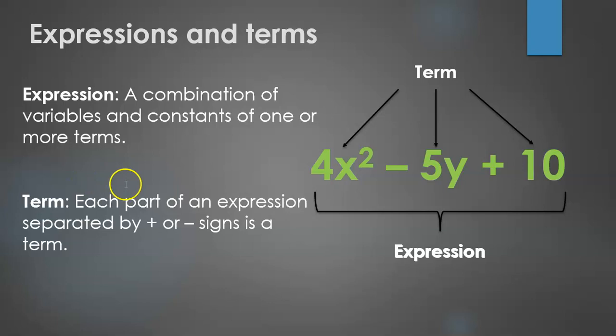For instance, if you had an expression of the form a minus 4b plus 5c, then a would be one term, minus 4b would be the second term, and plus 5c would be the third term. Easy enough.